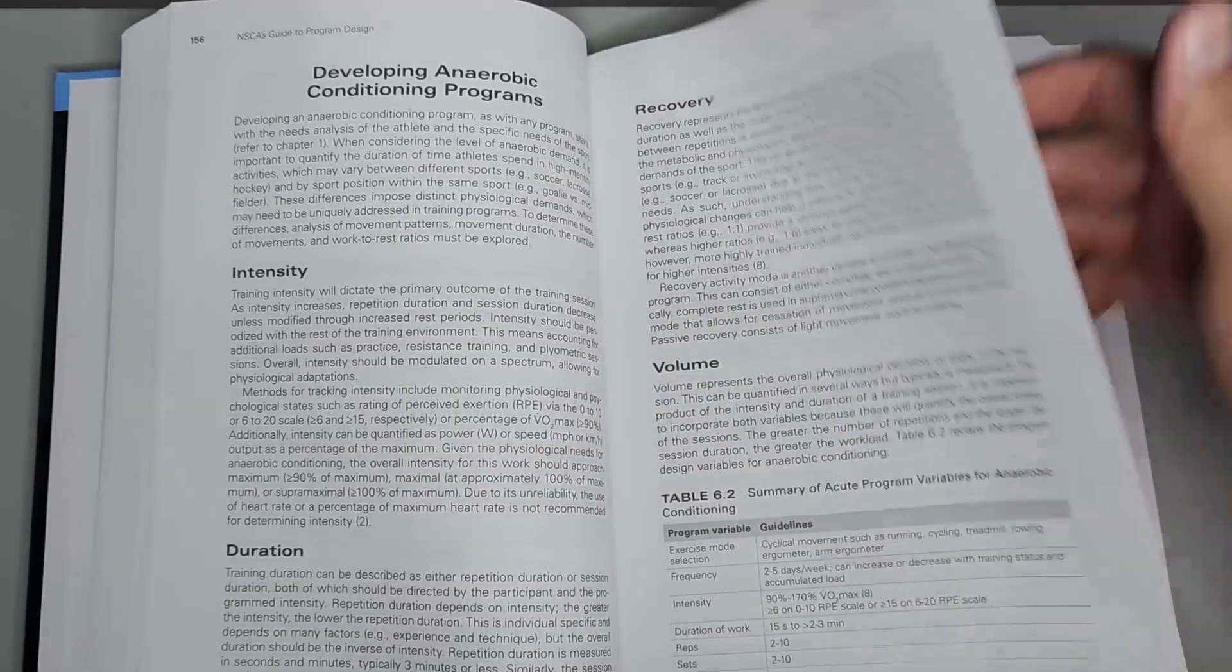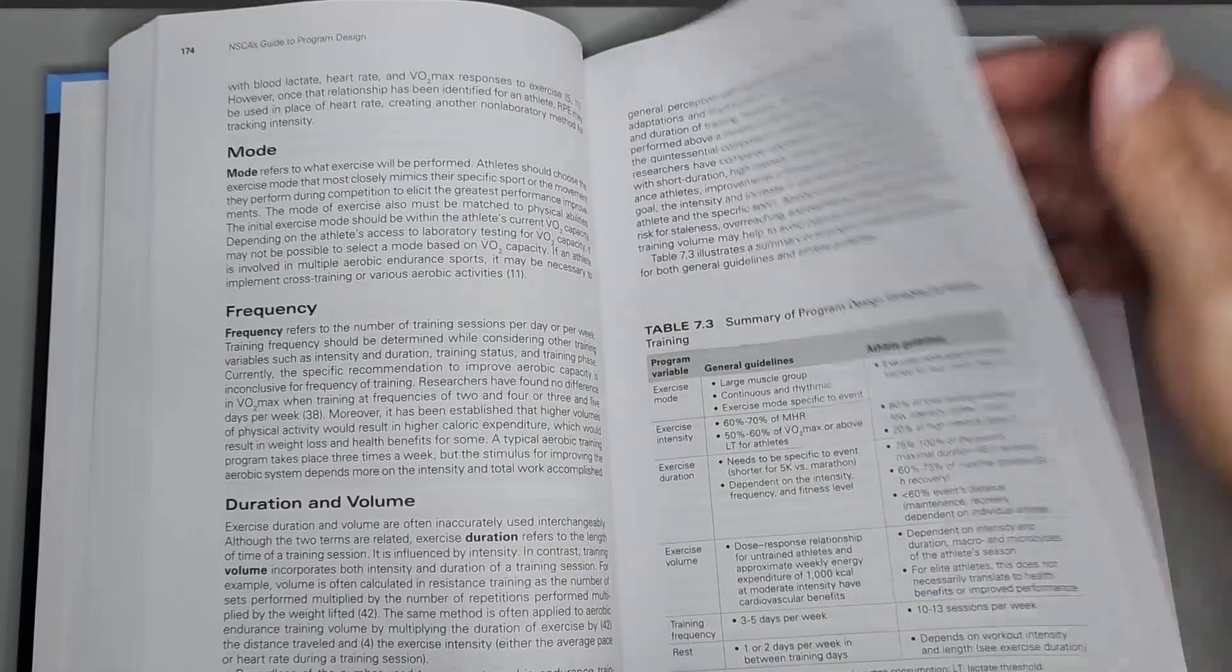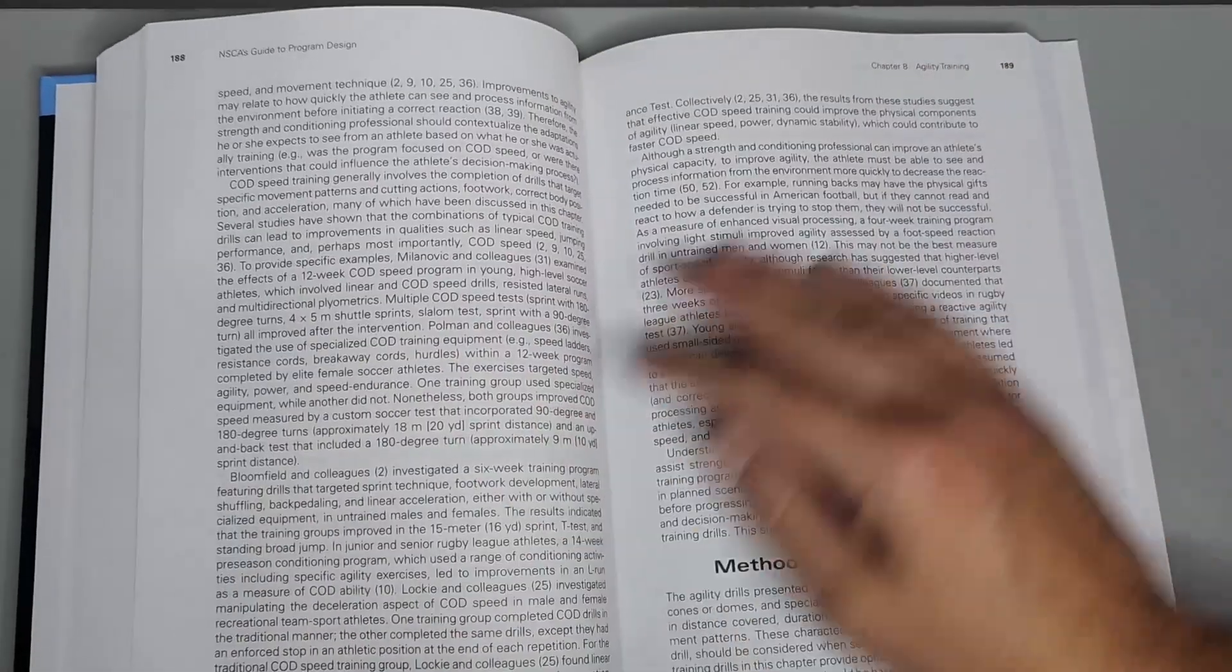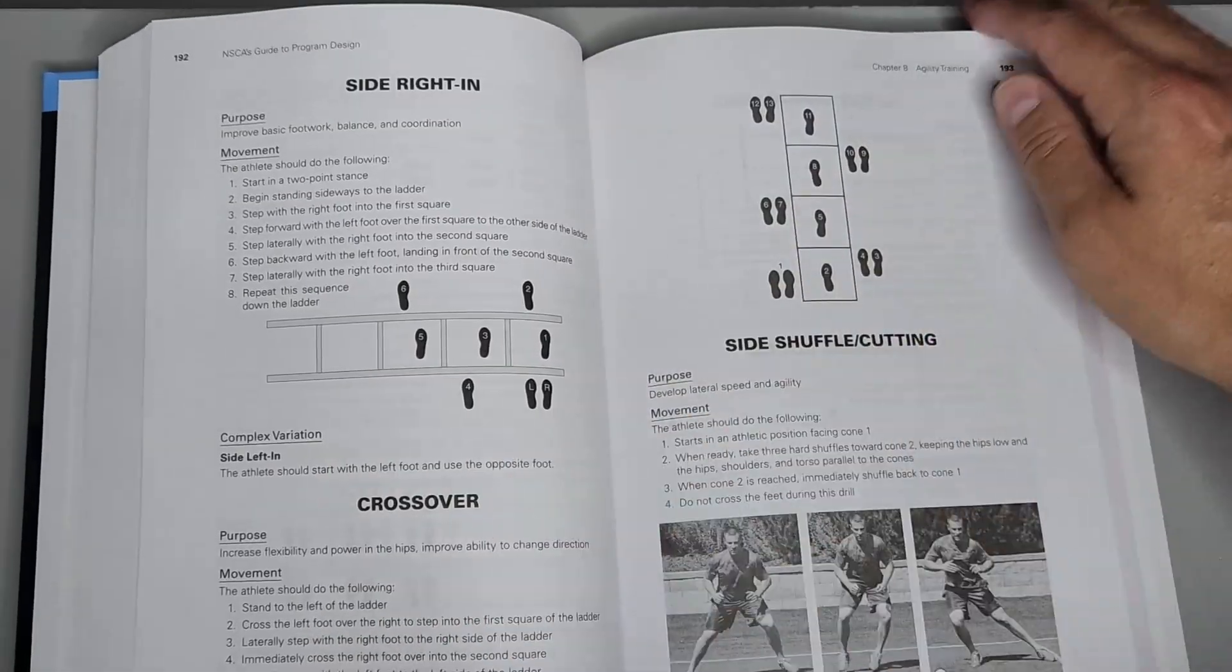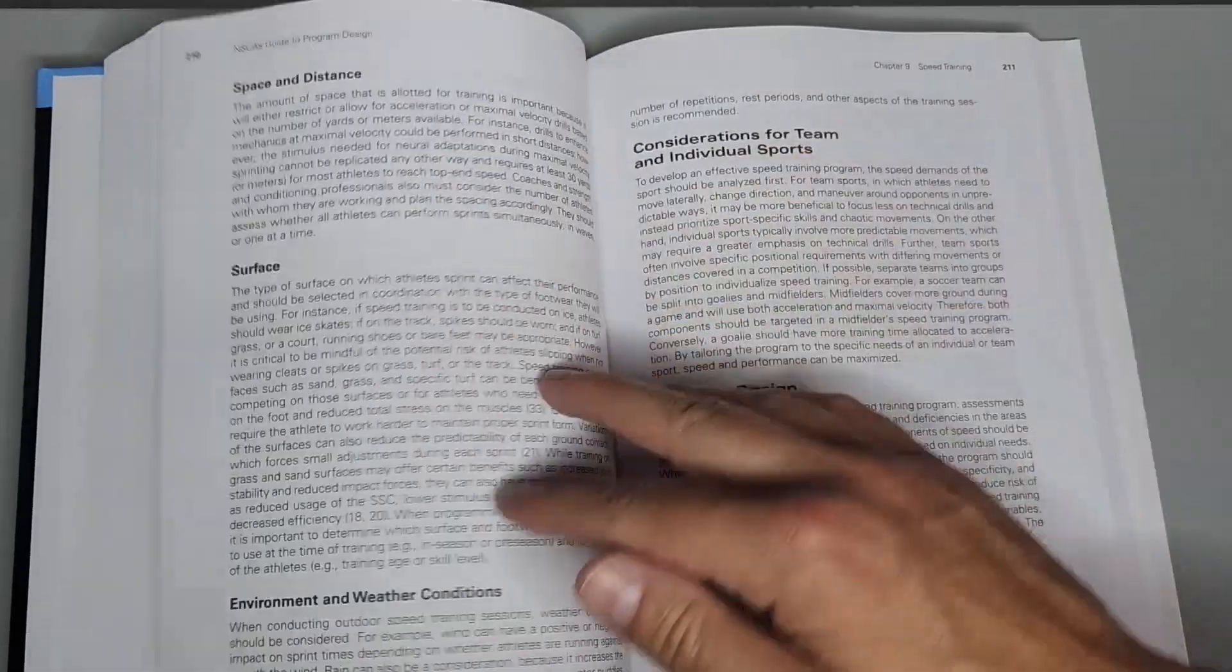NSCA's Guide to Program Design is part of the Science of Strength and Conditioning series. Developed with the expertise of the NSCA, this series of texts provides guidelines for converting scientific research into practical application covering topics such as tests and assessments, program design, and nutrition.